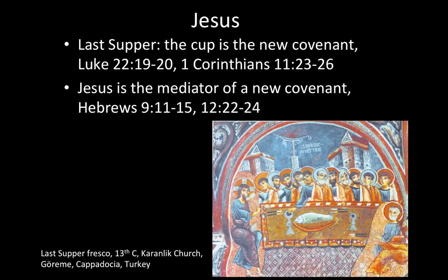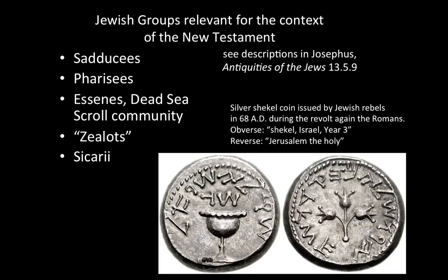Jesus, of course, then gives us the new covenant. At the Last Supper, the cup is the new covenant, as described in Luke 22, and then reflected upon and cited by St. Paul in 1 Corinthians chapter 11. Hebrews is a wonderful letter for reading how all of this language of Judaism encountered in the New Testament — especially in Matthew — is reflected on with Jesus as that high priest, utmost king, divine savior, and mediator of this new covenant. Now we can turn to briefly look at some of the Jewish groups we see in the New Testament, familiar from the first century. Much of this comes from Josephus, a Jewish historian who wrote a long history called The Antiquities of the Jews, starting with creation and going all the way up through his time. When describing the Jewish groups of the first century, it's from Book 13 of The Antiquities.